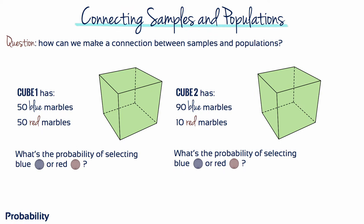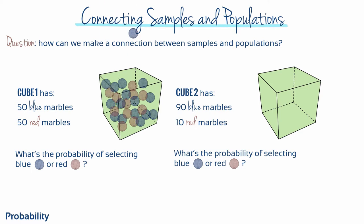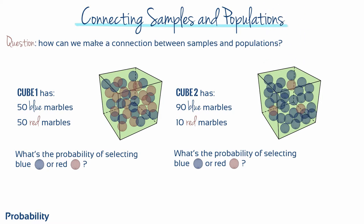How can we make a connection between samples and populations? Suppose we had two cubes that were each filled with blue and red marbles. The first cube has 50 blue and 50 red marbles, while the second cube has 90 that are blue and only 10 that are red. Think of the cubes as populations and the marbles as potential samples to be selected. If you were to close your eyes and pick a marble from each cube, what's the probability that you would select a blue or a red marble? Although we cannot guarantee the exact outcome of your choice, it's possible to talk about the likely outcome in terms of probabilities.